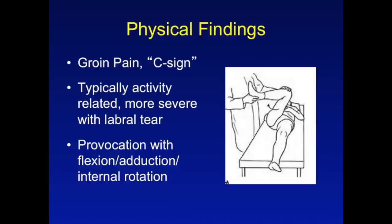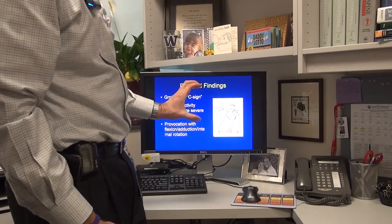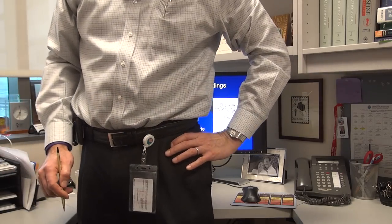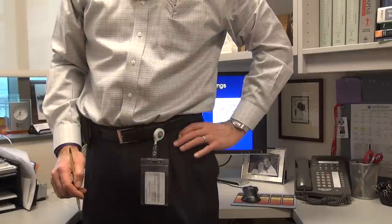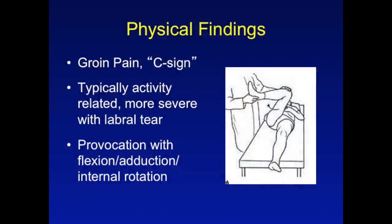Diagnosis of femoroacetabular impingement is typically performed through several findings, although none are especially specific. FAI is associated with groin pain and also what is known as the C sign. The C sign is described by taking your hand, making the letter C, putting it on the side of your hip just above the greater trochanter. Pain in this area is very much associated with FAI. Pain is typically activity-related, but can be much more severe when associated with a labral tear, to the point that patients find it difficult to even sit on the examination table.